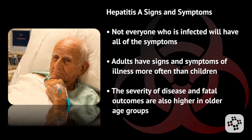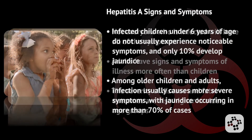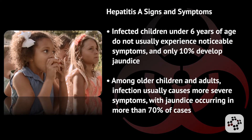Not everyone who is infected will have all of these symptoms. Adults have signs and symptoms of illness way more than children do, and the severity of disease and fatal outcomes are also higher in older age groups. Infected children under six years of age do not usually experience noticeable symptoms, and only 10% develop jaundice. Among older children and adults, infection usually causes more severe symptoms, with jaundice occurring in more than 70% of cases.